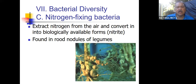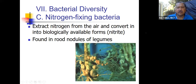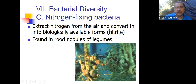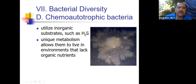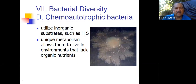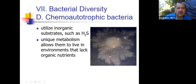Here's a better picture of legumes, which have nitrogen-fixing bacteria. It says they extract nitrogen from the air and convert it into biologically available forms. We breathe in nitrogen but can't use it. But plants with these nodules have bacteria in them that can change nitrogen — from diatomic nitrogen to nitrites, and then other bacteria change nitrites to nitrates. Here are the chemoautotrophic bacteria that use hydrogen sulfide — they break the hydrogen off the sulfur and use the energy from that covalent bond.